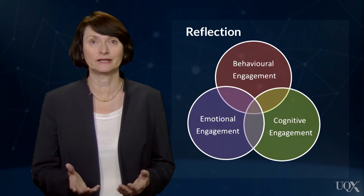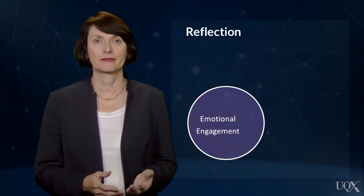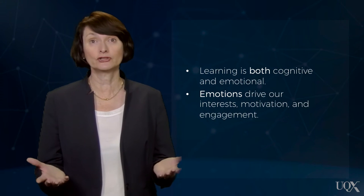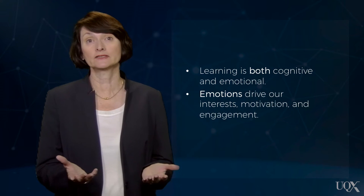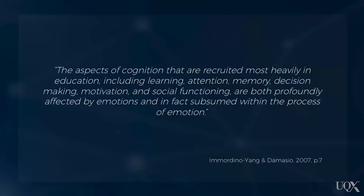But there is another essential ingredient: emotions. Learning is both cognitive and emotional. Emotions drive our interests, motivation and engagement. Imordino Yang and DiMazio define emotions as the perception of emotionally relevant triggers, either real or imagined, that trigger a physiological response leading to a behavioural and psychological outcome. Importantly, they tell us that the aspects of cognition recruited most heavily in education — including learning, attention, memory, decision-making, motivation and social functioning — are both profoundly affected by emotions and in fact subsumed within the process of emotion.